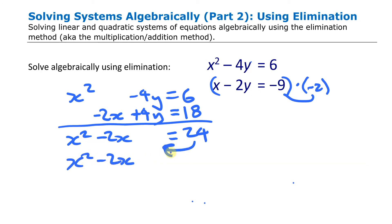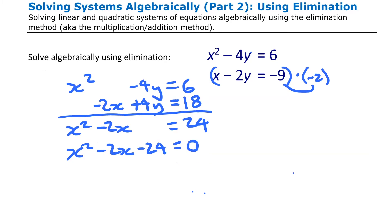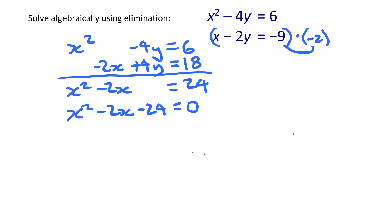To proceed, I want to move that 24 to the other side, giving x² − 2x − 24 = 0. The simplest way to solve that is to factor it into two binomials.